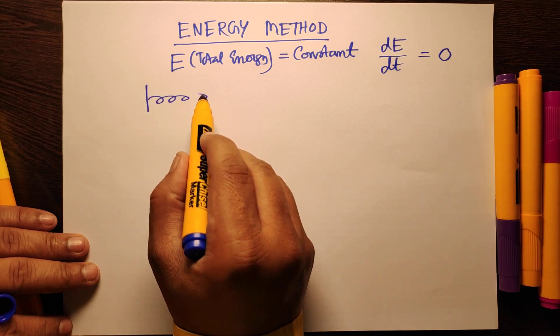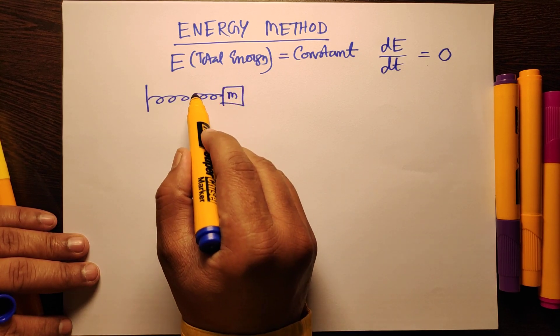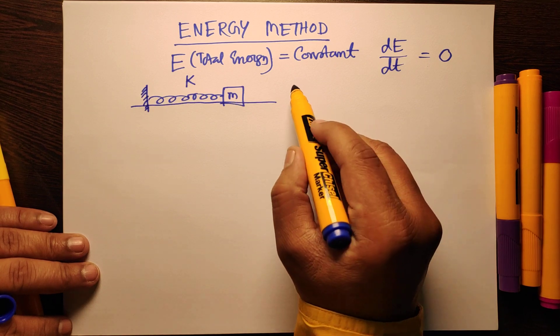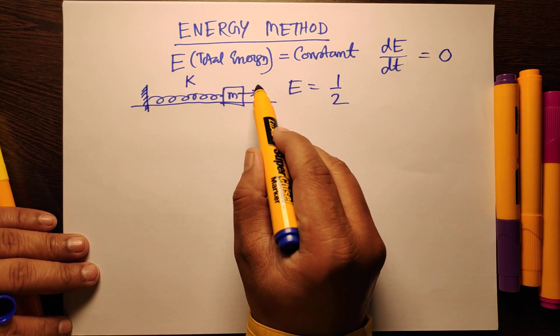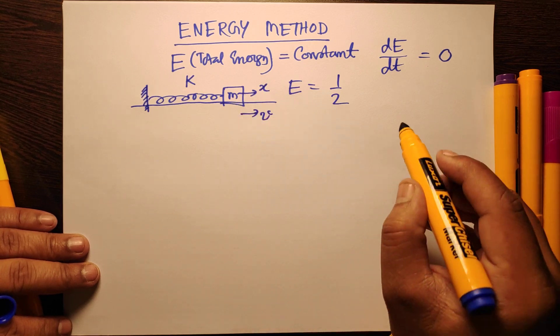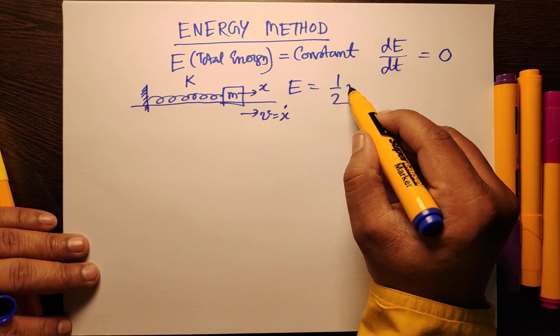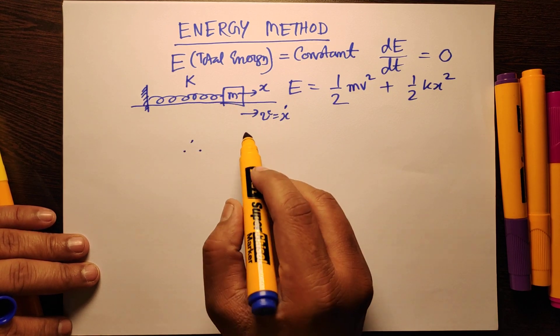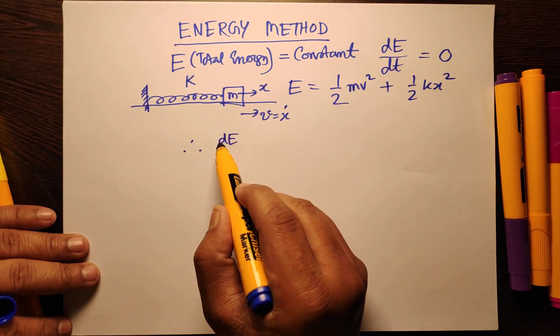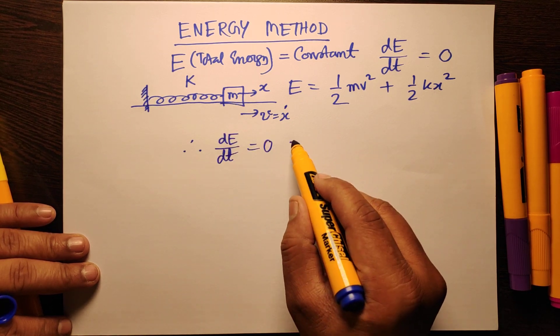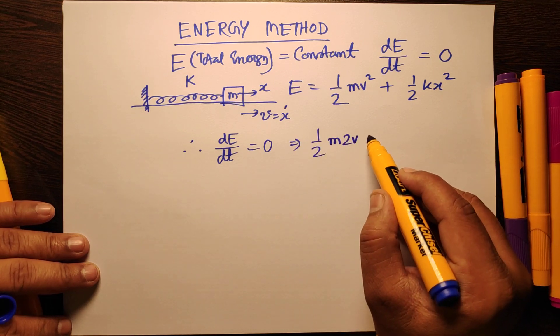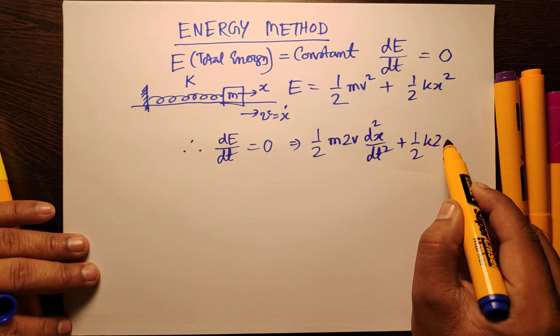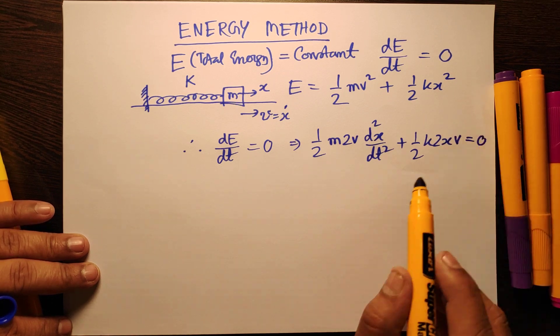Let us take up this very simple case: this spring-block system, m block, mk, this is the fixed end, to find the time period. We can write E equal to half - if this is displaced by x, this will gain a velocity v which is ẋ. So half mv² plus half kx². Therefore, differentiate this E with respect to time: dE/dt you get 0, which implies half m·v·(dv/dt), that is d²x/dt², plus half k·2x·(dx/dt) - v - that is equal to 0.